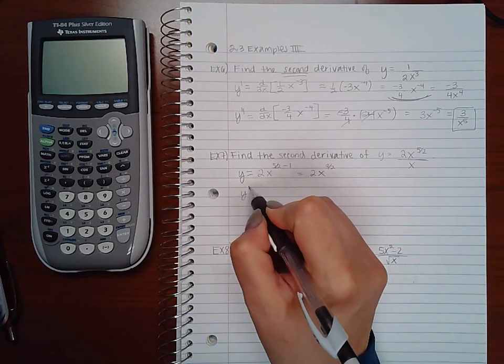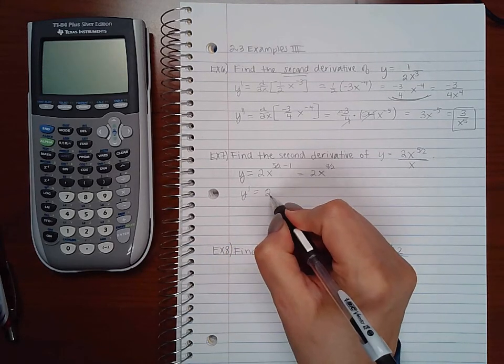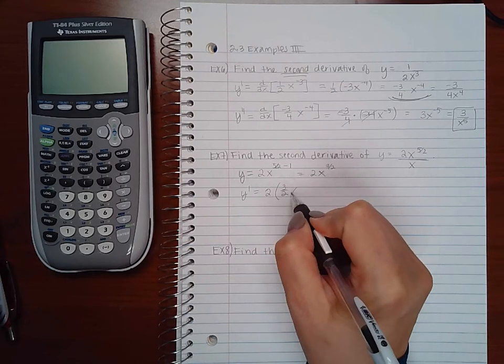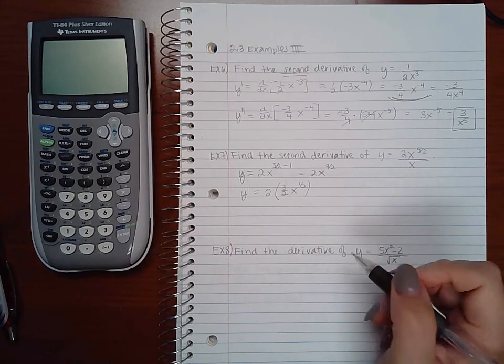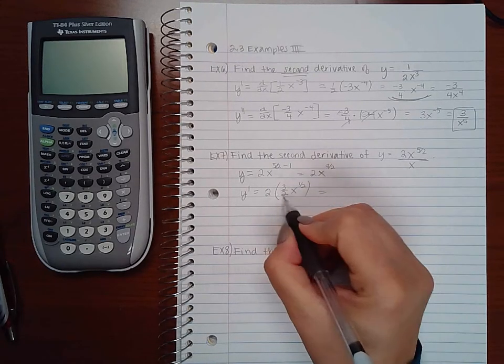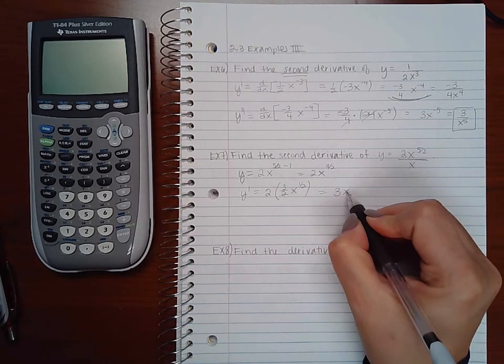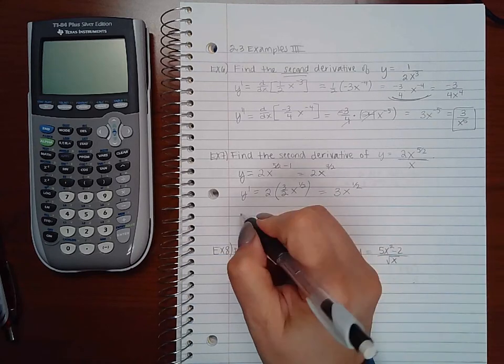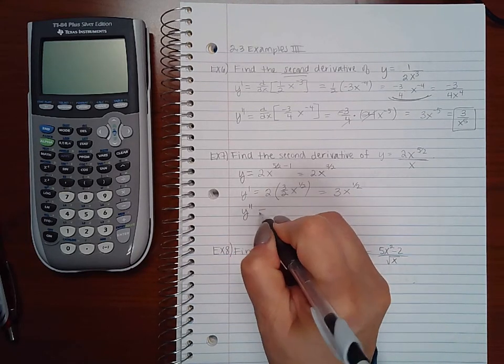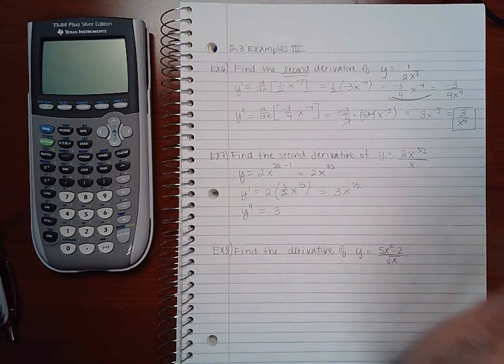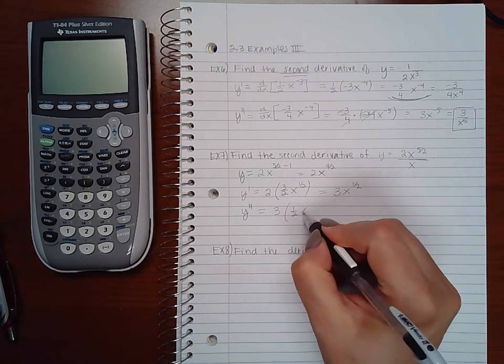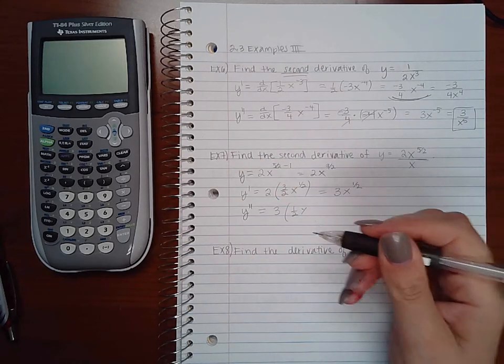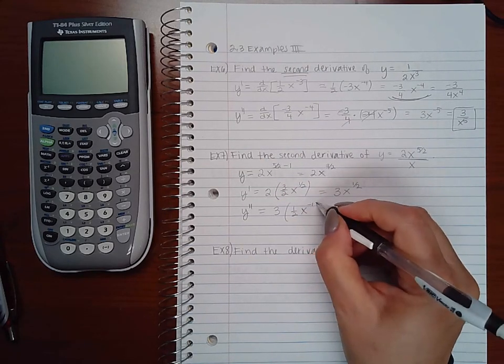Now when I take the first derivative, there's my constant multiplier, bring down my power, and decrease the power by 1, giving me 1 half. If I do the second derivative, 3 is my constant multiplier, and then if I bring down my power, and decrease the power by 1, I will get negative 1 half.